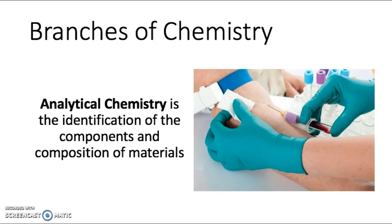Another branch of chemistry is analytical chemistry, which is the identification of the components and composition of materials. Analytical chemists develop tests to detect chemicals in the blood, and these tests help to show if organs in the body are working properly.